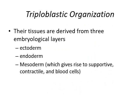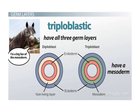Triploblastic organization has three layers: ectoderm, endoderm, and mesoderm. Mesoderm gives rise to supportive structures and blood cells. In the diagram, the green color represents mesoderm. Humans are triploblastic.